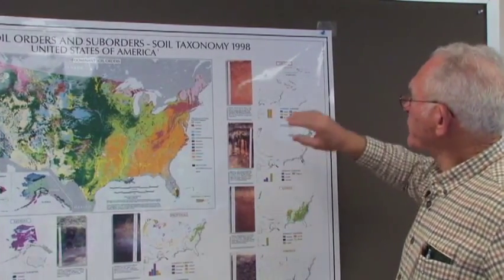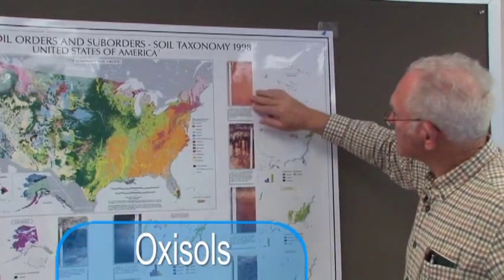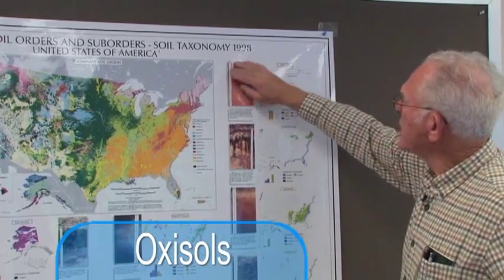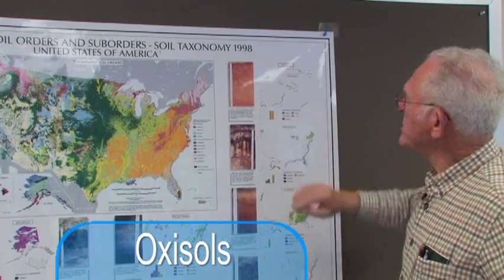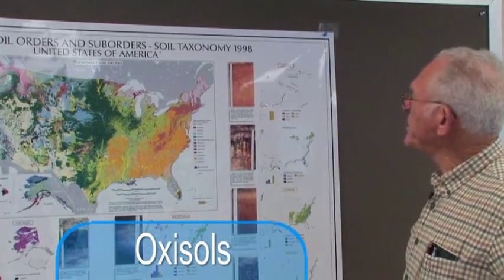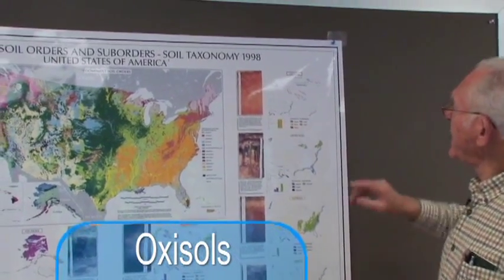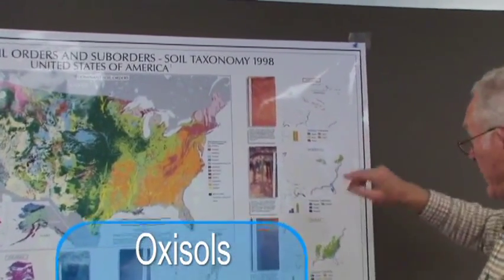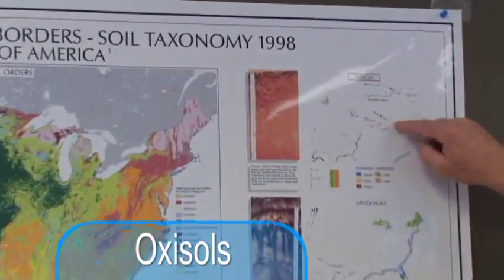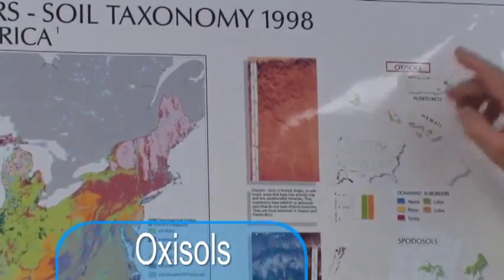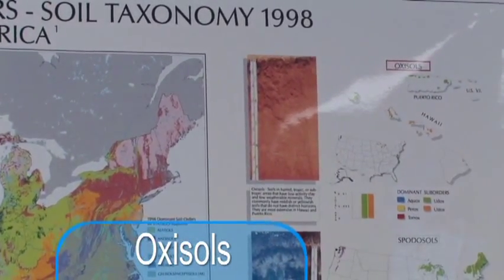For example, the oxisols that we see here — the very reddish — are very characteristic of the humid tropics, and for the U.S. would be a part of Puerto Rico and Hawaii, where we have those kinds of environments.